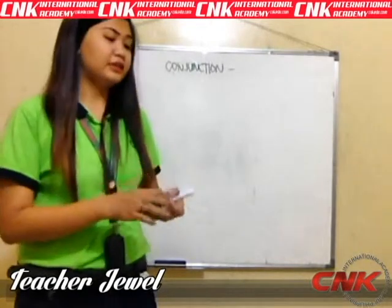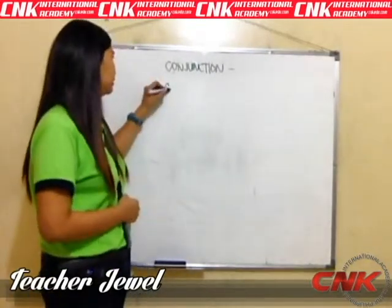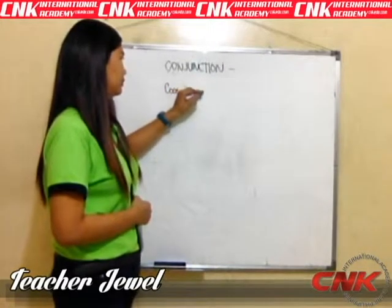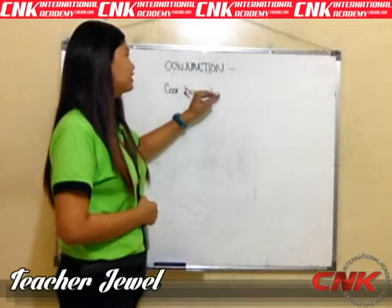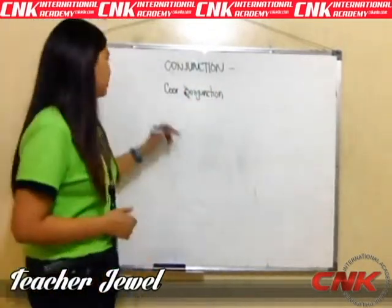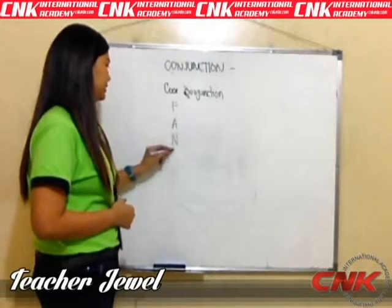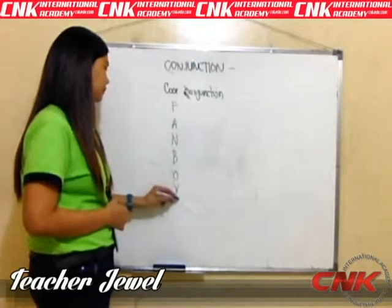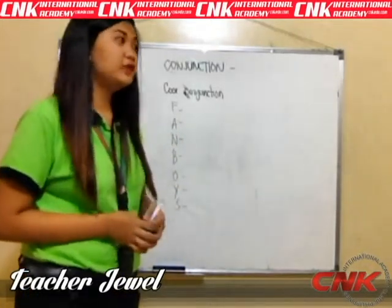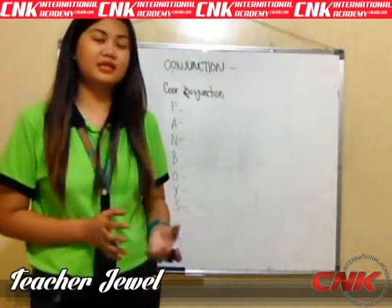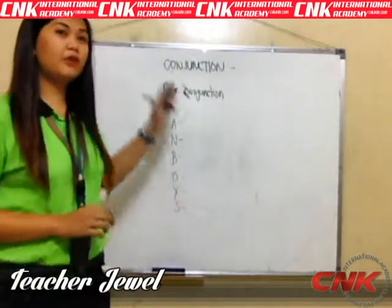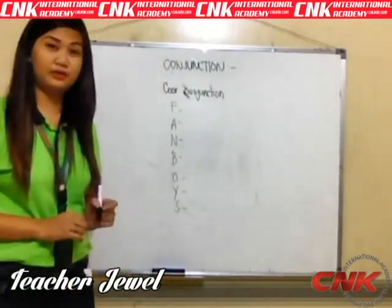In conjunction, we have what we call coordinating conjunctions. What are the coordinating conjunctions? It's very easy. We have the acronym FANBOYS. We have seven coordinating conjunctions, and we use this when we are writing a compound sentence. Of course, each coordinating conjunction has its own use.